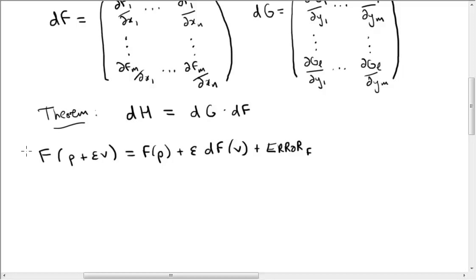So let's now apply g. What we get is, of course, h at p plus epsilon v, because this is just the composite. But we can also apply g on this side.